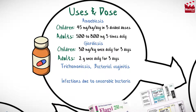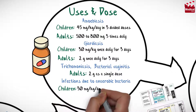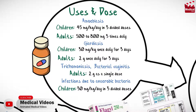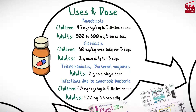For trichomoniasis and bacterial vaginitis, the usual dose for adults is 2 grams as a single dose. In the case of trichomoniasis, the sexual partner must also be treated. For infections due to anaerobic bacteria, the dose for children is 30 milligrams per kilogram per day in three divided doses, and for adults 500 milligrams three times daily. According to indication, metronidazole may be used in combination with other antibacterials, and treatment duration depends on indication.